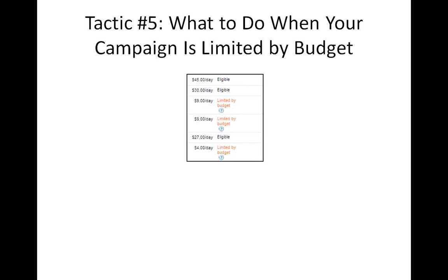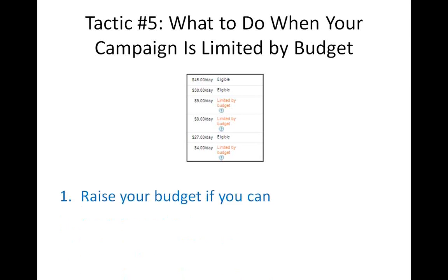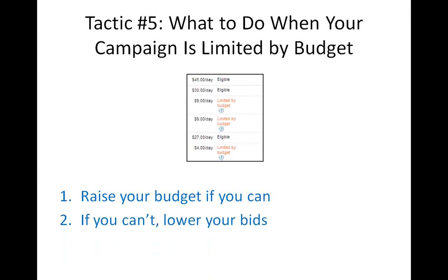Sometimes our budget is not enough for the amount of traffic we want to get, and some ad groups and keywords are limited by budget. If you've done your homework and your campaign is profitable — meaning you're making more money than the campaign costs you — my advice is to increase your budget. If you're making $3 for every dollar you spend, increase your budget because the more you spend, the more you'll make. But if that's not possible, you can always lower your bids. For example, if you're spending $10 a day and paying $1 per click, you get 10 clicks; lower your bids to 50 cents and you get 20 clicks for the same budget.